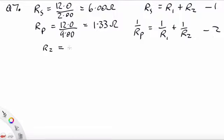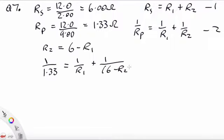So RS was 6, so we have R2 was 6 minus R1, and then we're told that 1 over RP, which is 1 over 1.33, is 1 over R1 plus 1 over 6 minus R1. So what we're now going to do is multiply both sides by R1 times 6 minus R1, and then we're going to see what we get.